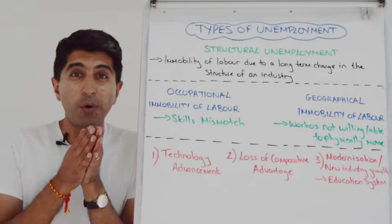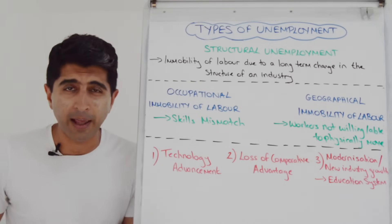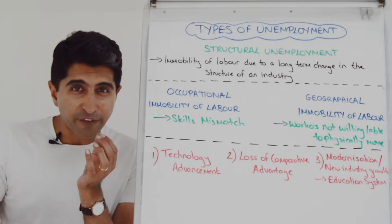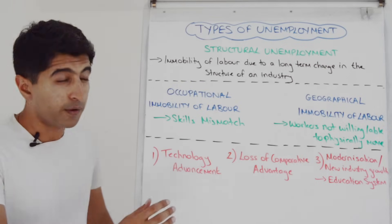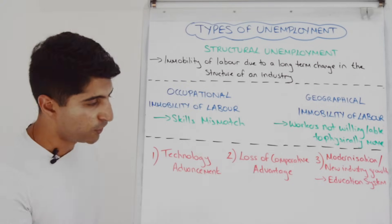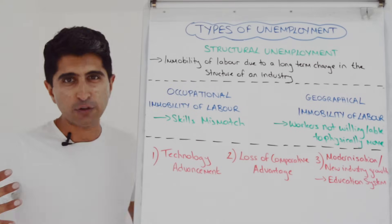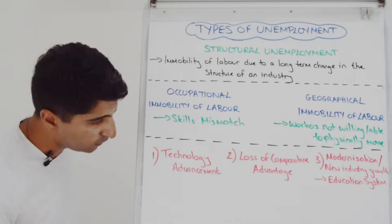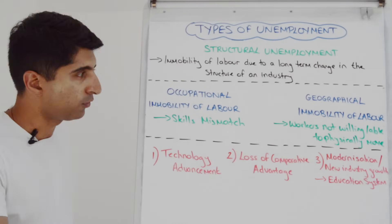What could cause a long-term change in the structure of an industry? A major shock would be technology advancement that automates physical jobs and replaces the need for physical labour. We're seeing that everywhere: in banking, where a lot of personal banking is now digital rather than at physical branches; in farming, which has become mechanised, reducing the need for physical workers; in retail, where the shift to online retail has reduced the need for workers in physical stores; and massively in manufacturing, where the production process has become automated — no better example than car manufacturing, where the growth of robotics has taken over.